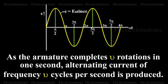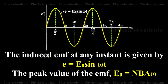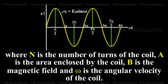As the armature completes new rotations in one second, alternating current of frequency new cycles per second is produced. The induced EMF at any instant is given by E is equal to E0 sin omega t. The peak value of the EMF, E0 is equal to NBA omega, where N is the number of turns of the coil, A is the area enclosed by the coil, B is the magnetic field and omega is the angular velocity of the coil.